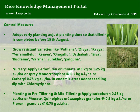Control measures: Adopt early planting. Adjust planting time so that tillering is completed before 15th August.